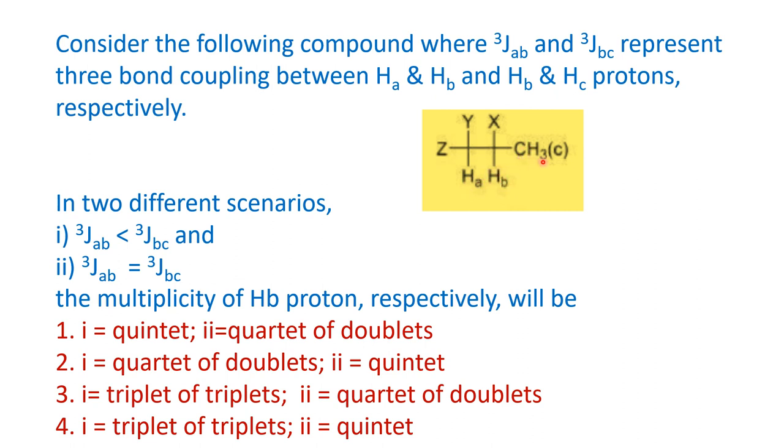Likewise, for C protons, we do not have a problem because only B is the neighbor. But whereas for HB protons, we have HA on the left-hand side and HC, the three hydrogens, on the right-hand side. So when we are seeing the signal of this particular proton, it is going to be affected by both HA and HC.